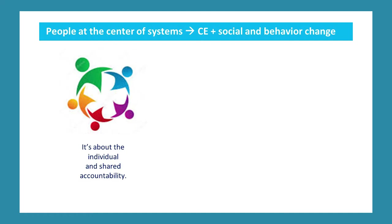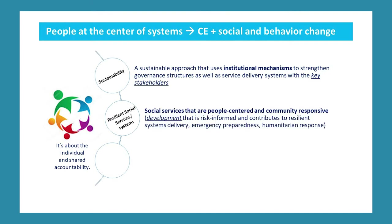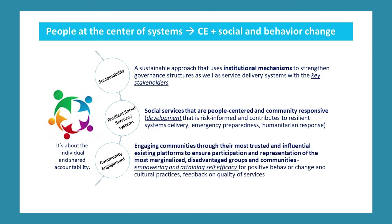This is centered around three core components: investing in strengthening governance structures; ensuring that development programs are risk-informed, which contributes to better preparedness and response in events of crises, building resilience of communities over time. And thirdly, when we prioritize community engagement, we engage communities through their most trusted and influential existing platforms to ensure participation and representation of the most marginalized, disadvantaged, or underserved communities, realizing that these relationships are built and maintained over time.